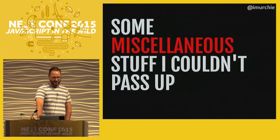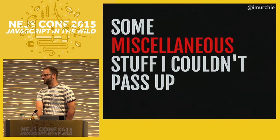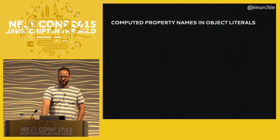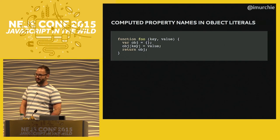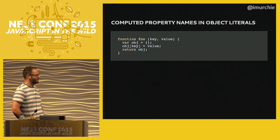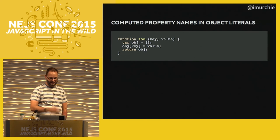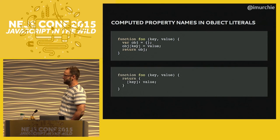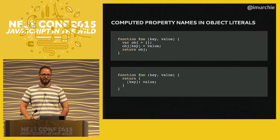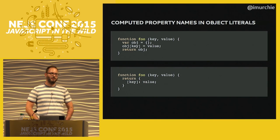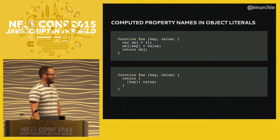Finally, just a bunch of little things that give you a cleaner path through your code. Computed property names in object literals — have you ever created an object, then had a key you didn't know ahead of time and had to assign it separately? Now you can use square bracket notation directly in the object literal, and the key becomes the property in that object without needing instantiation and initialization of properties to be separate steps.